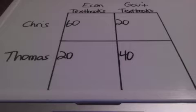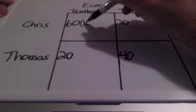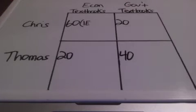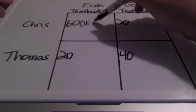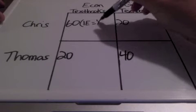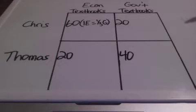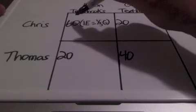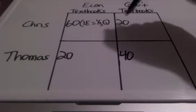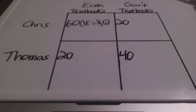In order to figure this out, we need to break these numbers down into as small as they can go. Starting with Chris and econ textbooks — for every one econ textbook (I'm abbreviating econ with the letter E), Chris can produce one-third of a government textbook (G for government). How did I get one-third? I took 20 divided by 60. For output questions, the other side goes over — so 20 goes over 60, giving us one-third.